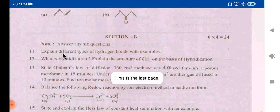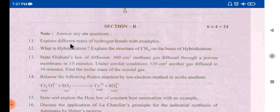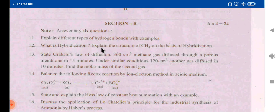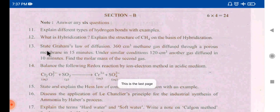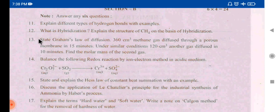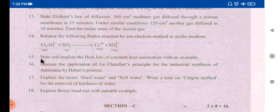Next section: explain different types of hydrogen bonding. What is hybridization? — explain the structure of CH4, the methane molecule, including hybridization definition. Use hydrogen bonding and chemical bonding topics. Next, use Graham's law problem — 4 marks. The 14th question is balancing an equation — states of matter. The 15th is: state and explain Hess's law of constant heat summation — thermodynamics. Two marks and four marks.